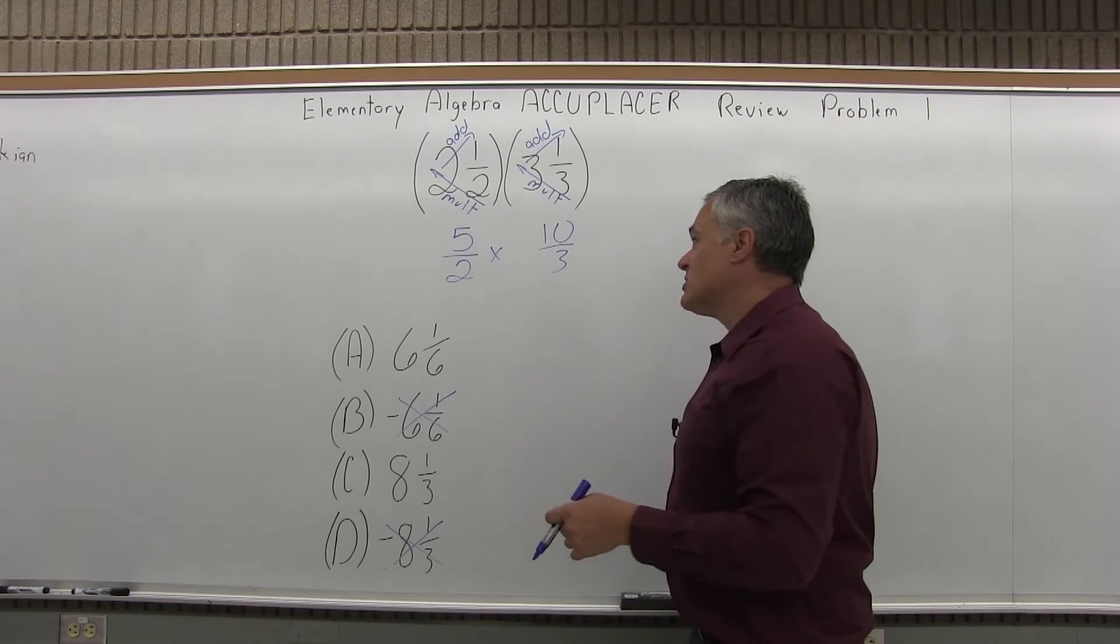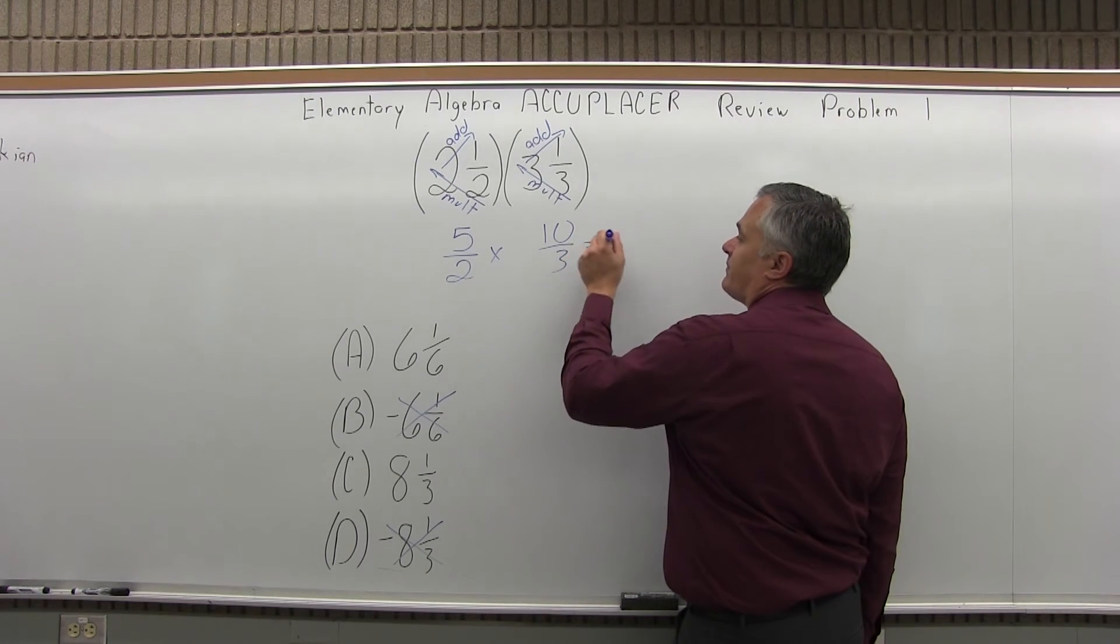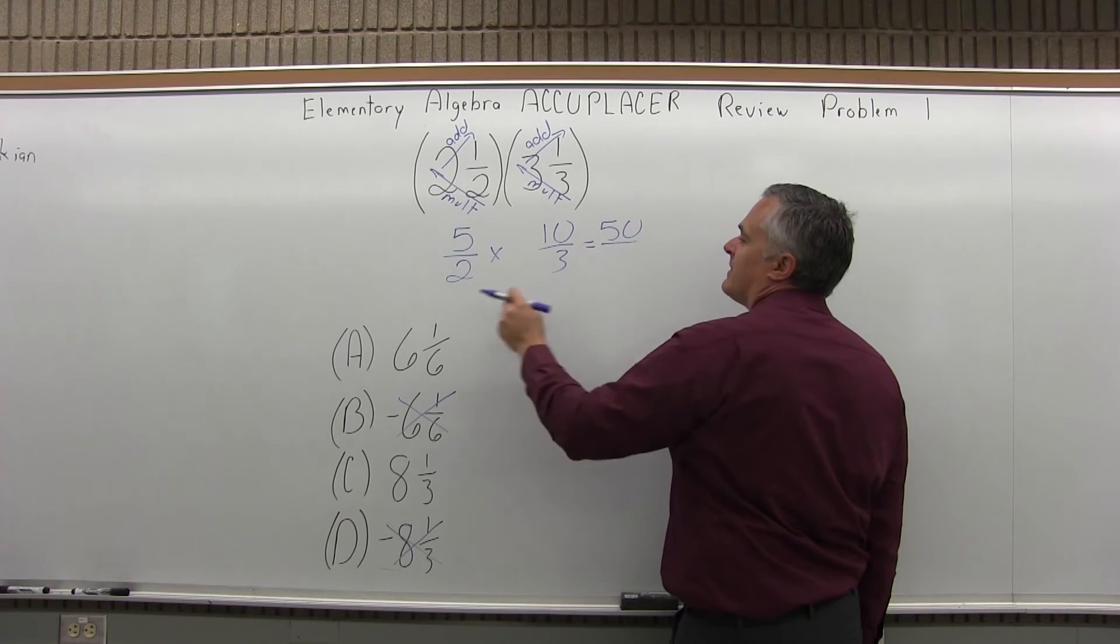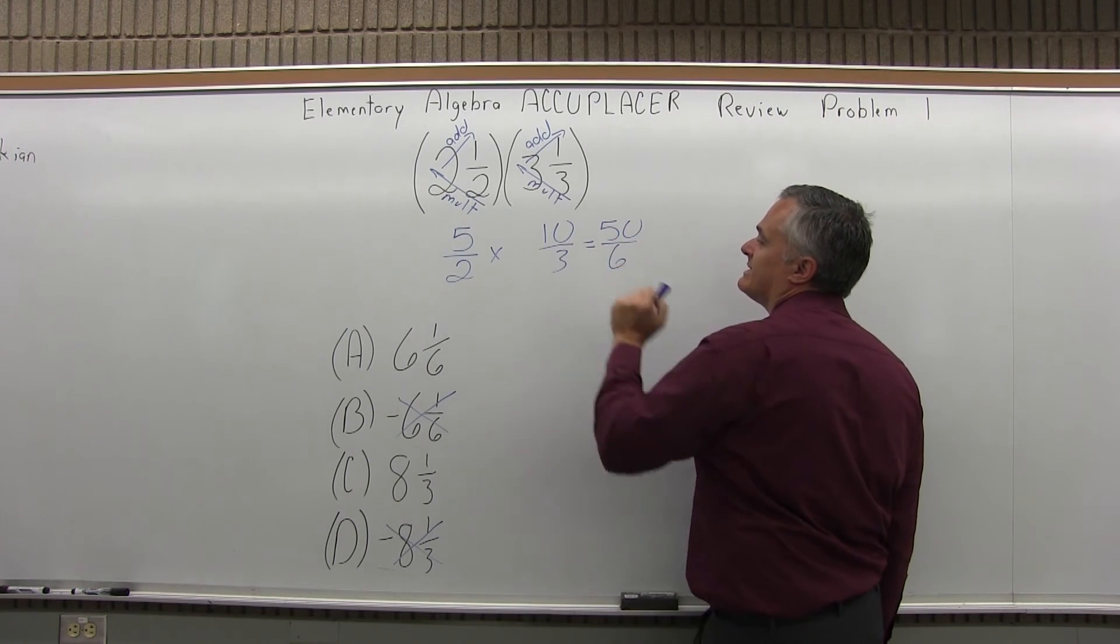Now we can multiply, top times top, bottom times bottom. Top times top, 5 times 10 is 50. And then bottom times bottom, 2 times 3 is 6.